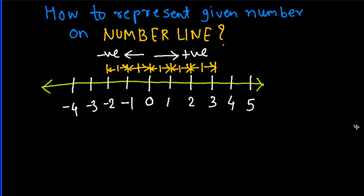Now suppose you want to represent a number between 0 and 1, like 1/2. Then the distance from 0 to 1/2 will be 1/2, and from 1/2 to 1 will also be 1/2, making up the full 1 unit. If you want to represent 1/4, it will be somewhere over here. Theoretically, you can represent infinitely many points between any two points on the number line. This gives you a basic idea about the number line.